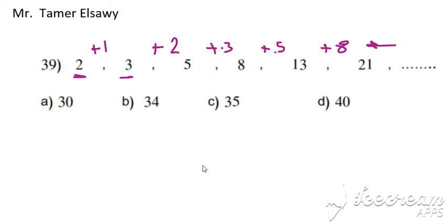We can add 21 plus 13 is 34. Good. Or another strategy: two plus three is five, five plus eight, eight plus thirteen is twenty-one.